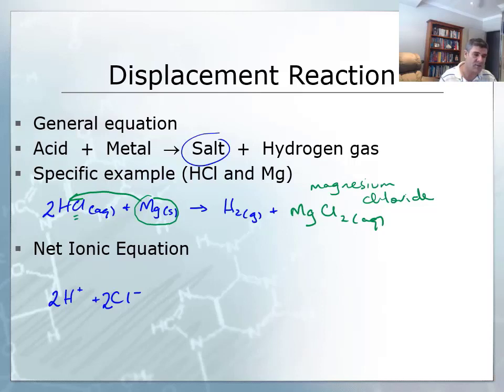But balancing equations is obviously a very important part of writing your chemistry. So we've also got magnesium, and as a solid it is not an ionic form. And they're going to produce magnesium ions and chloride ions, too, and hydrogen gas.